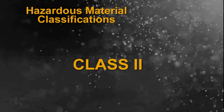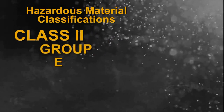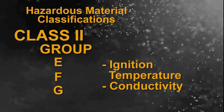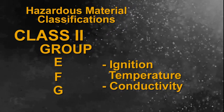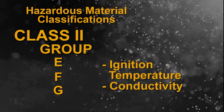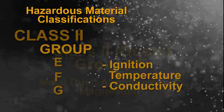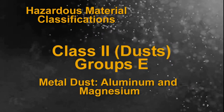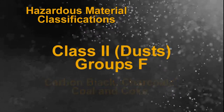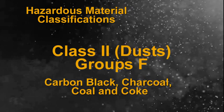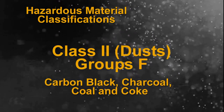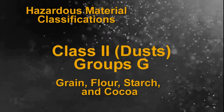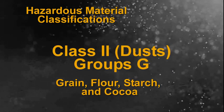In Class 2 dust locations, we find the hazardous materials in Groups E, F, and G. These groups are classified according to the ignition temperature and the conductivity of the hazardous substance. Conductivity is an important consideration in Class 2 locations, especially with metal dust. Metal dusts are categorized as Group E, including aluminum and magnesium dust. Group F atmospheres contain materials such as carbon black, charcoal dust, coal, and coke dust. In Group G, we have grain dust, flour, starch, cocoa, and other similar materials.